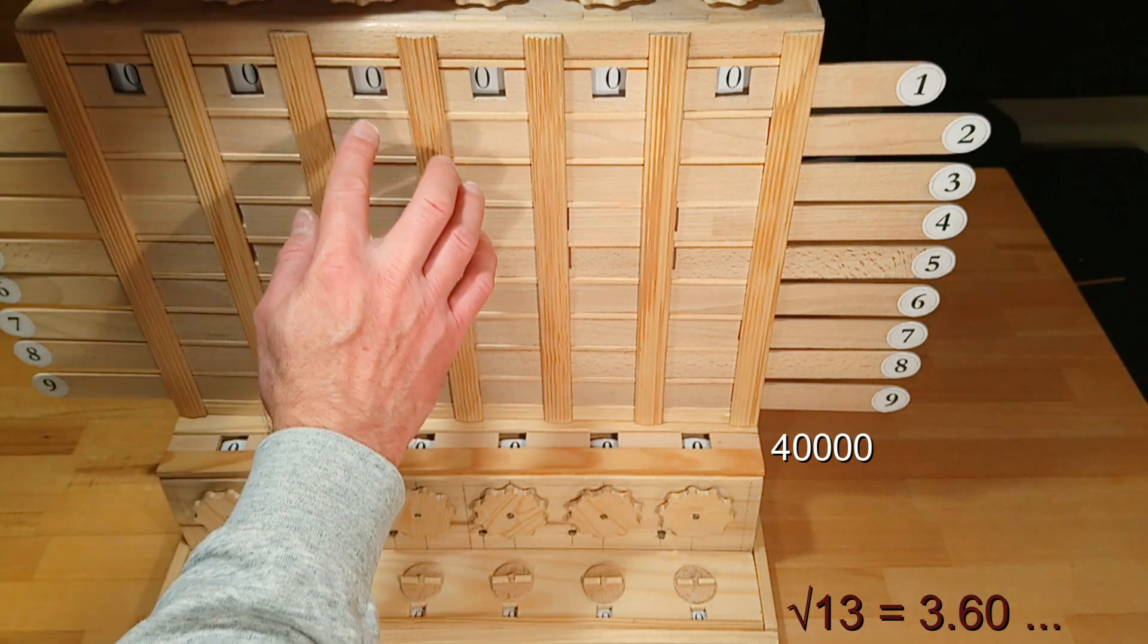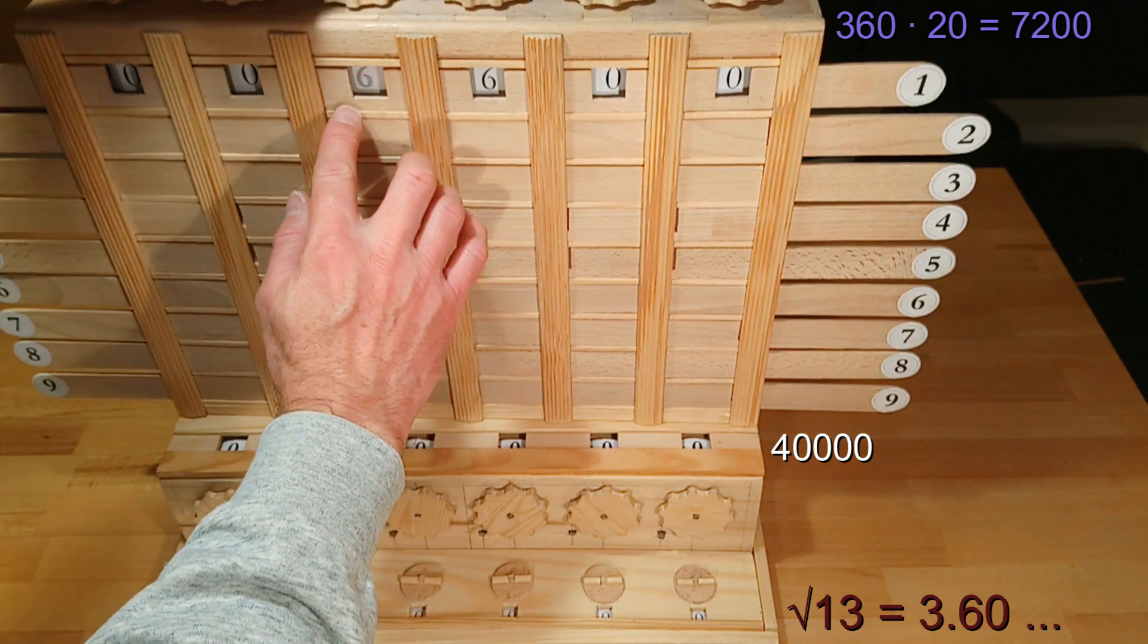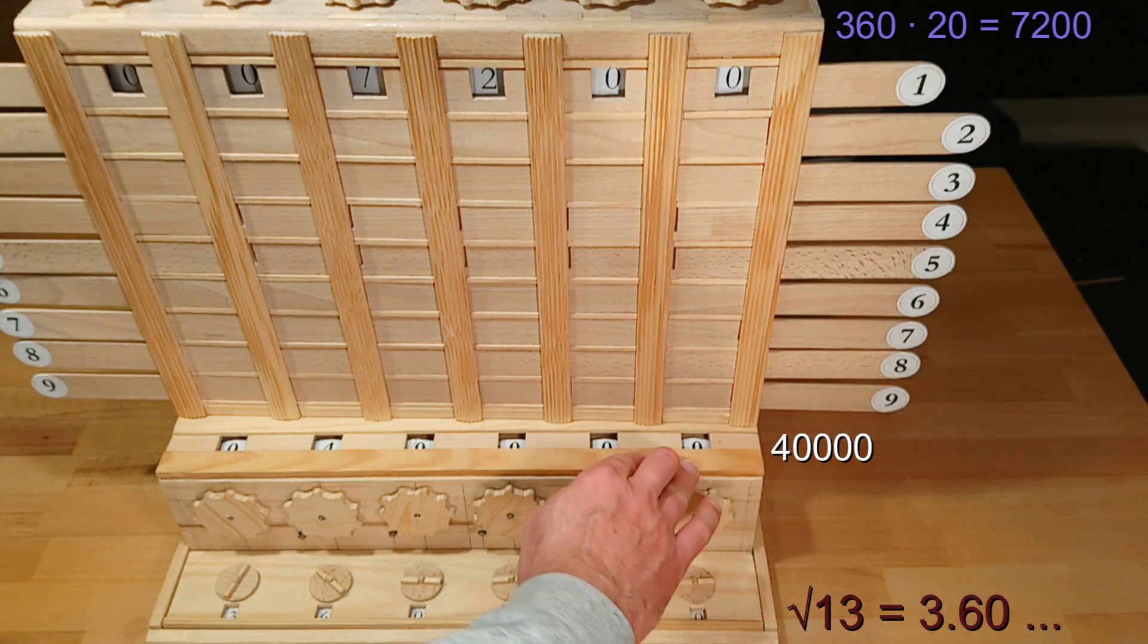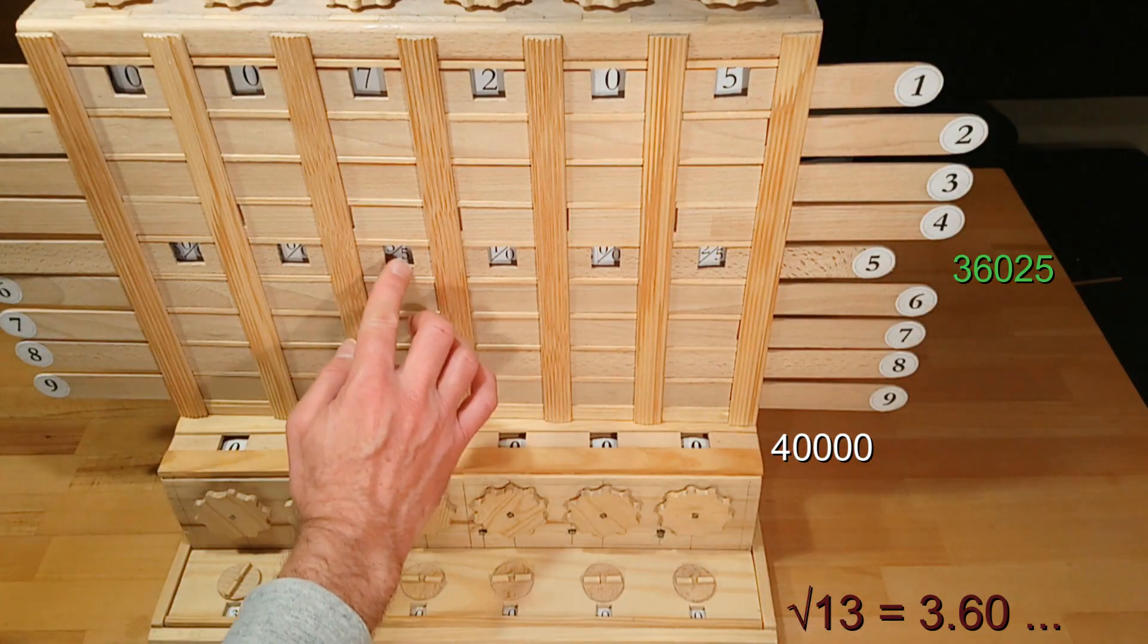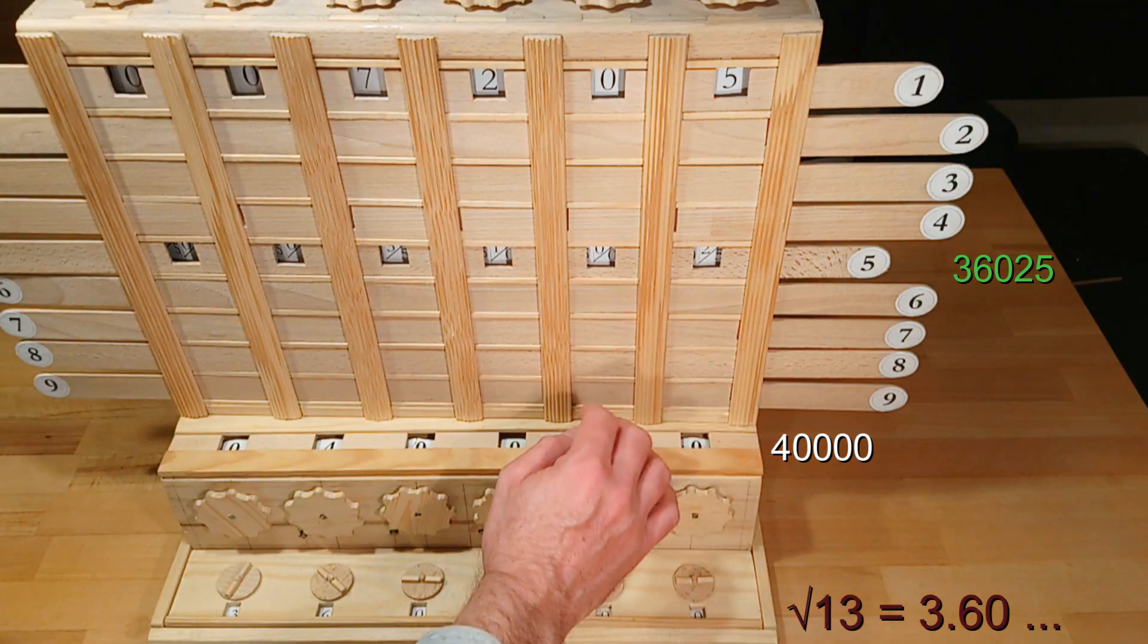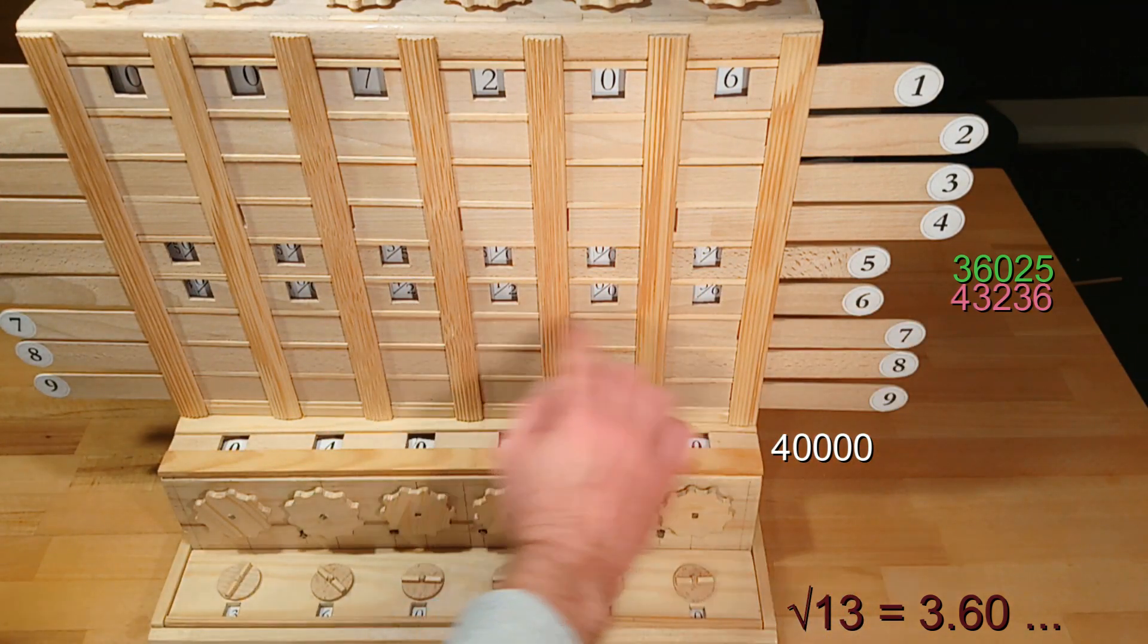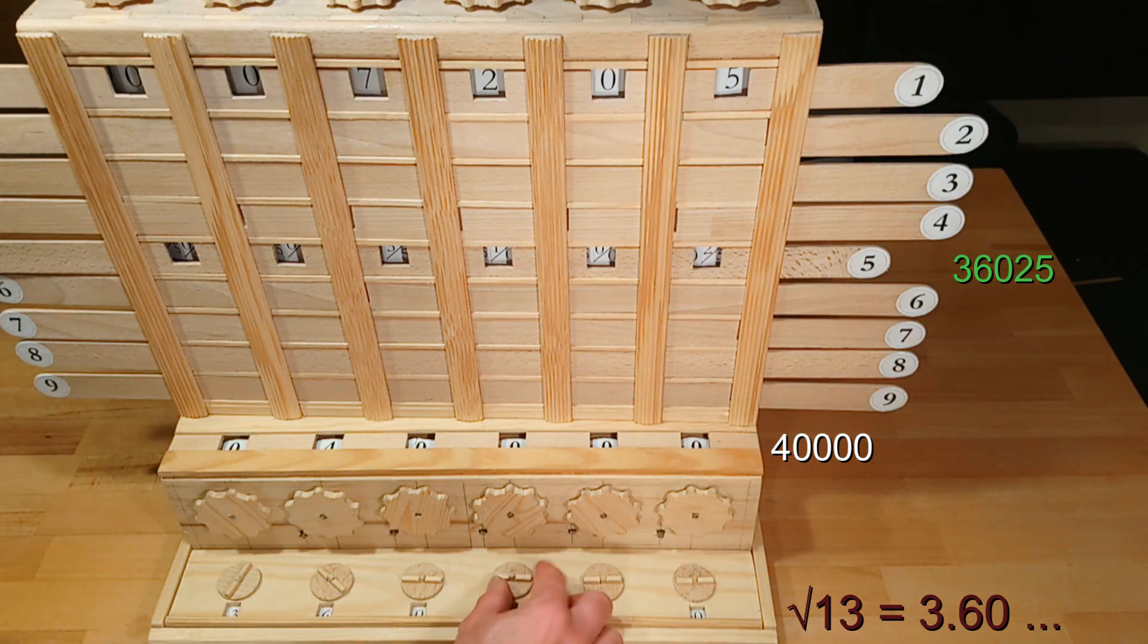Then we transfer this 360 as 3600 in the multiplier and multiply it by 2. That's 7200. And now we are looking for the number 7200 plus x multiplied by x that's less or equal 40,000. Let's try 5. That would be 36,025 which would work. Now let's try 6. That would be greater than 43,000. That means the next result digit is 5. I'll transfer that into the result memory. And we found 3.605 so far.